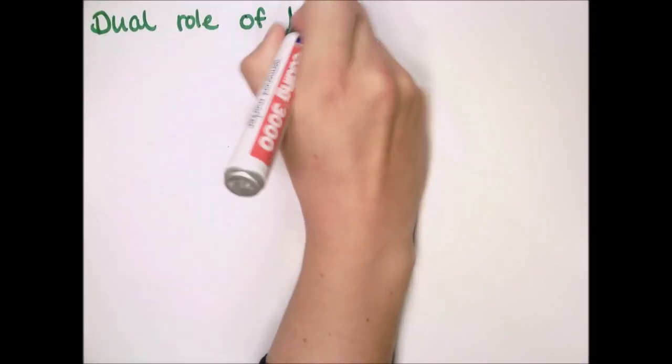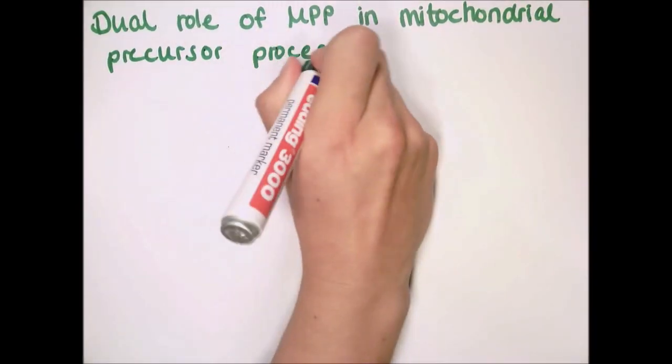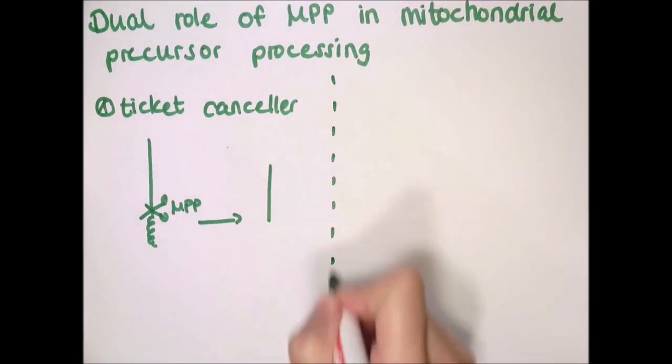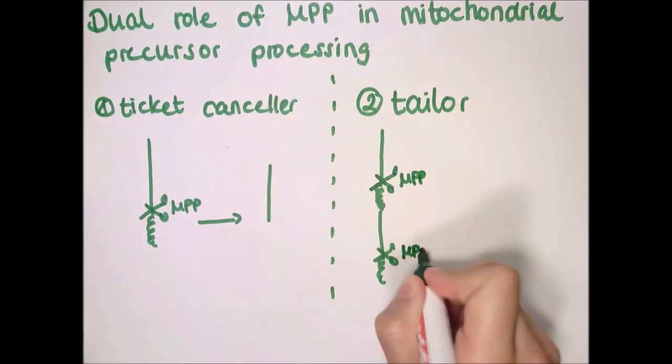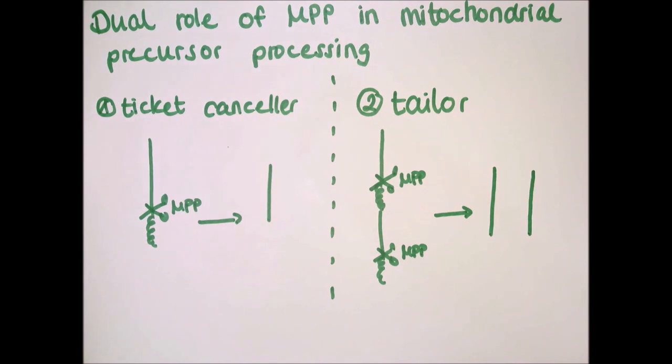In this study, we discovered that MPP has a second job. It moonlights as a tailor and cleaves some precursor proteins in the middle to produce two distinct functional enzymes.